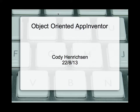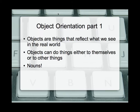Today we're going to be looking at object orientation with App Inventor. App Inventor is the software that we are using to understand and begin to learn programming in our class. Object orientation is the style or the format that we're using — it's also called a paradigm. The paradigm of programming we're using is object orientation.